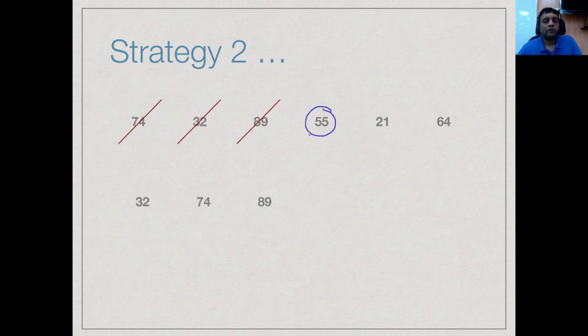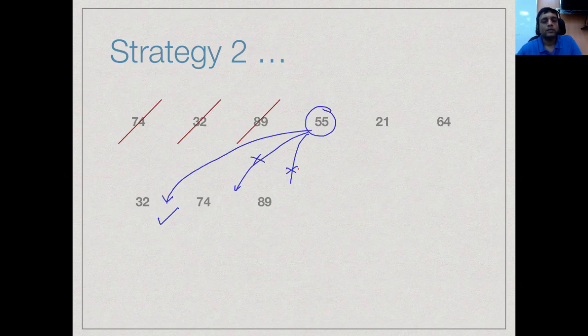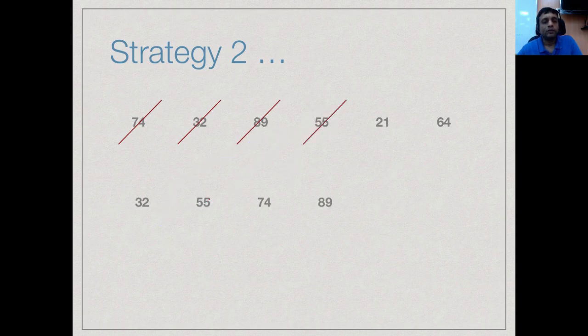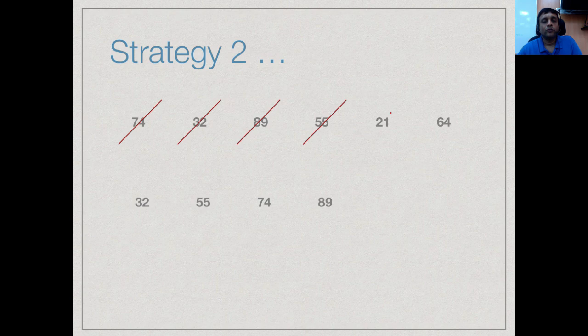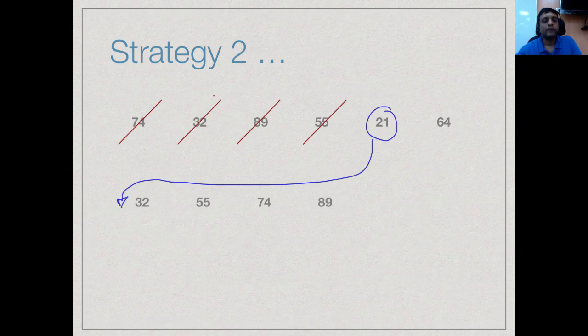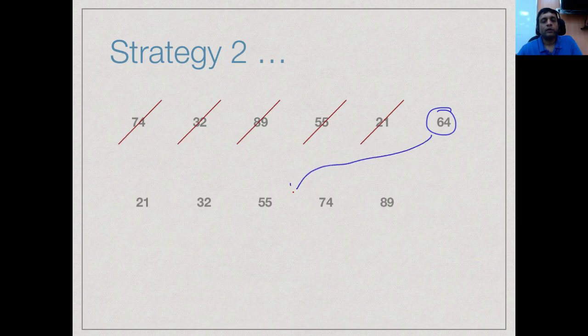Now we take 55 and have to find out where it goes. We can start at the end and say it is not here, it must go to the left. Then we finally find that this is the correct place for it to go. This is the insertion step. We take each element and walk down to the point where we want to insert it. So 55 comes between 32 and 74. Now where does 21 go? If we try to insert it, it turns out it must go all the way to the beginning because it is smaller than everything we have so far. Finally, when we do 64, it will come between 55 and 74.